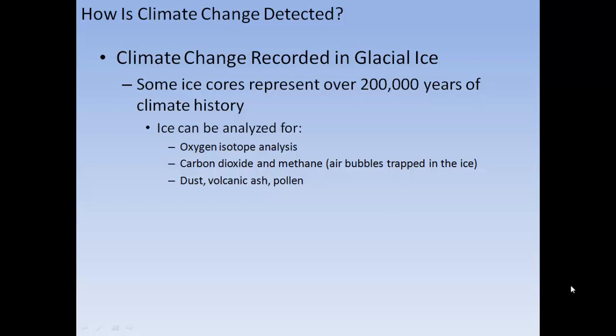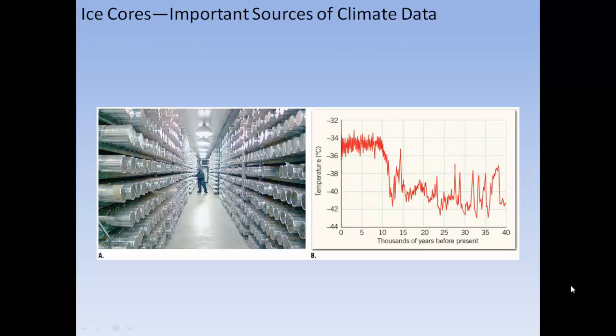Ice can also be analyzed for carbon dioxide and methane from air bubbles trapped in ice, as well as dust, volcanic ash, and pollen. Ice cores stored show temperatures and change in temperature for thousands of years before the present.